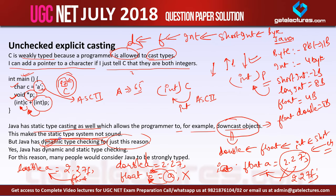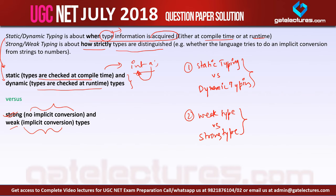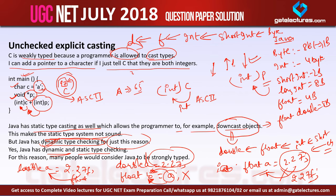Java has both dynamic and static type checking. That is why we consider Java as strongly typed and C as weakly typed. Coming back to the question: statement P says C programming language has a weak type system — this is correct — and it has static typing, meaning types are checked at compile time, which is also correct.